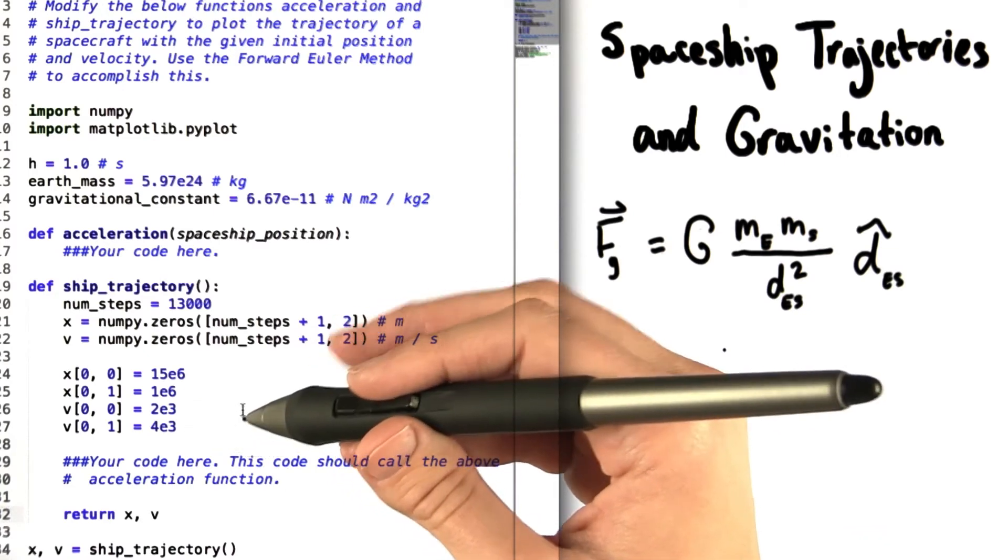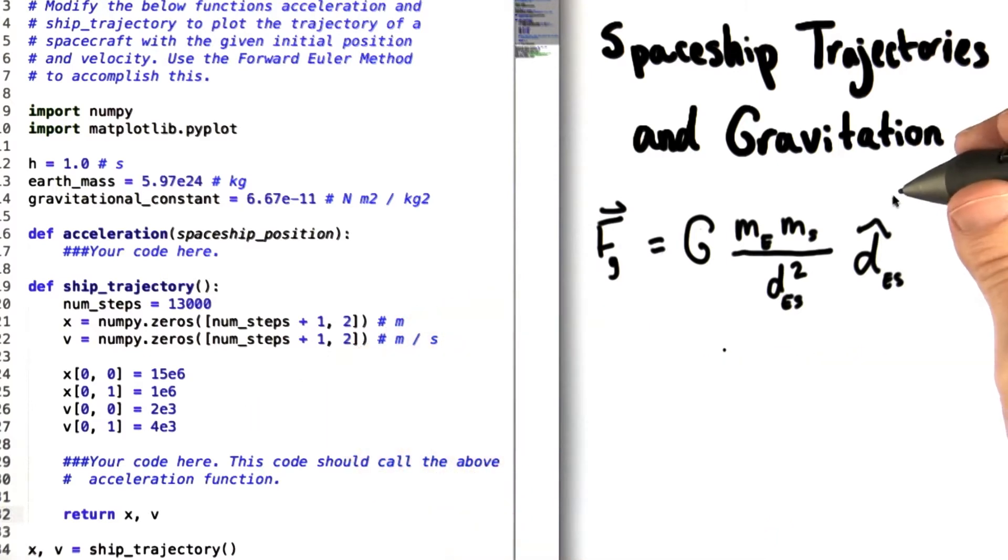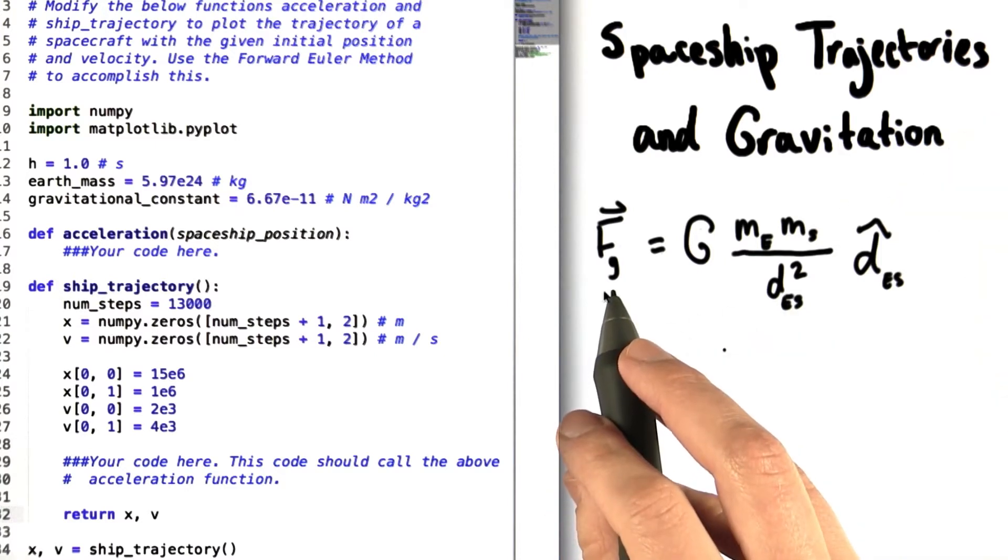Now I'm going to remind you of some information that's especially helpful for this problem. We talked earlier about the equation for the gravitational force between two objects. That's what this little g here next to the F for force stands for, gravity.